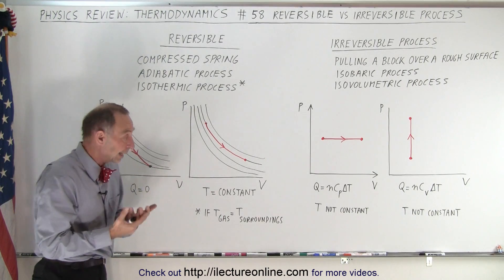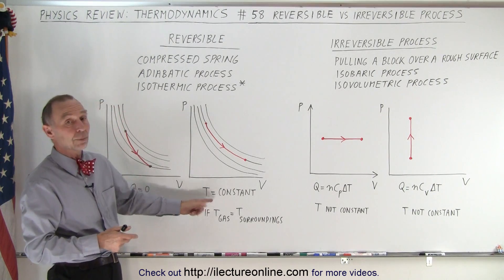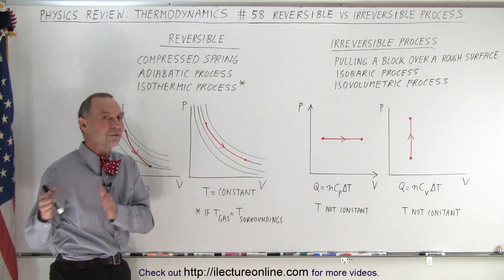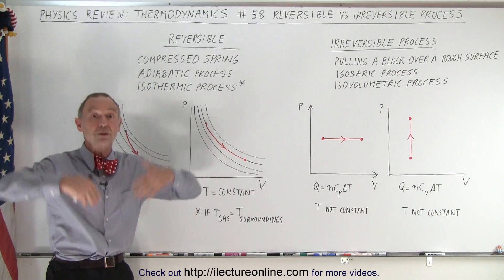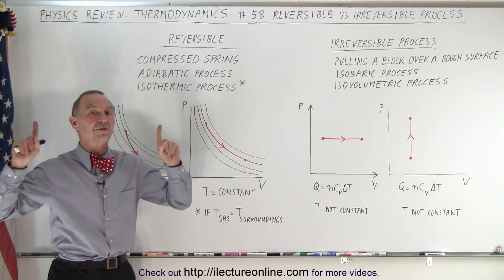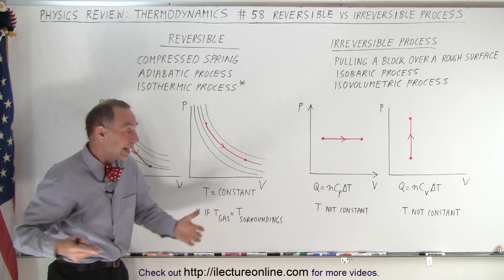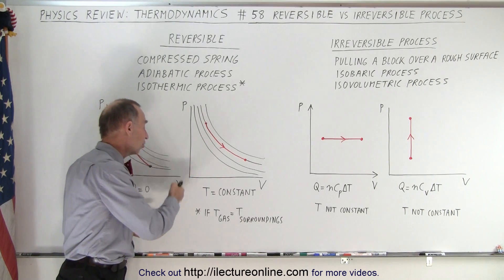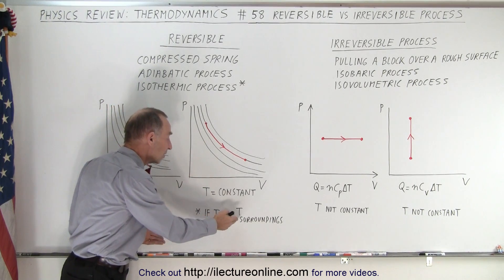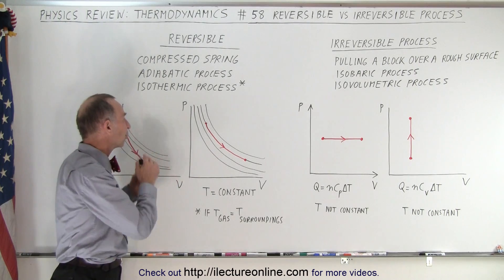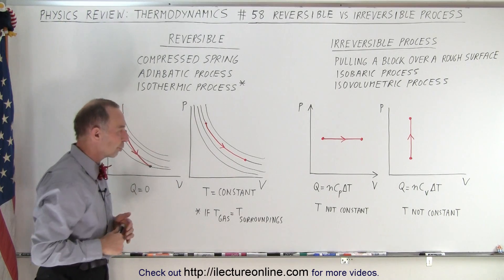It doesn't come from the internal energy of the gas, otherwise the temperature would not remain constant. So it has to be pumped in from the outside world. Whenever there is a heat exchange, typically entropy goes up unless the temperature of where you take the heat from and where the heat is going to stays the same. Therefore, in the condition where the temperature of the gas remains the same as the temperature of the surroundings, we have a reversible process when talking about an isothermic process.